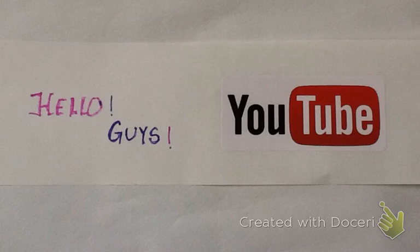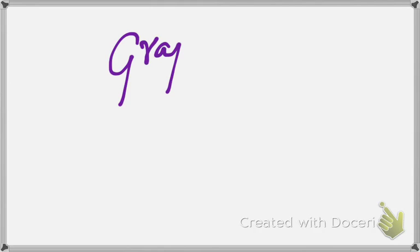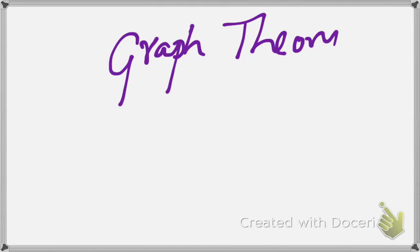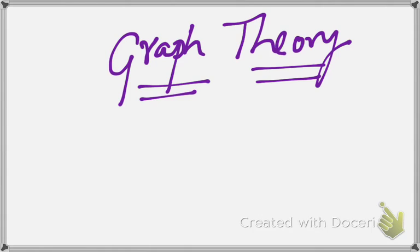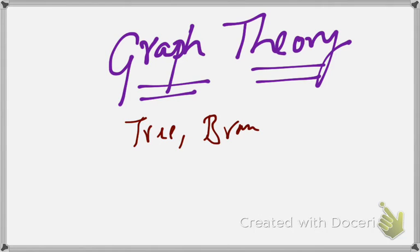Hello guys, hope you have been having a great day. In this video we'll be learning about many things and many definitions in graph theory. When we are given a power system or a network, we can reduce it into a graph. This graph has many components like branches, links, loops, and many other things. So when we are required to solve a graph or any power system, we need to be acquainted with terms like tree, branch, co-tree, etc. So in today's session, let us learn about just that.